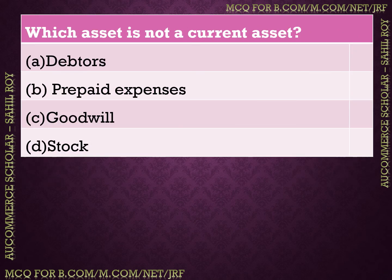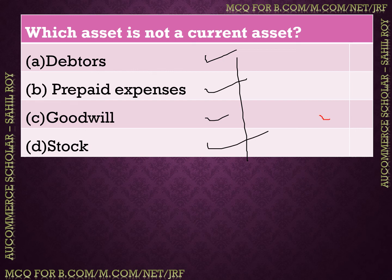The next question: Which asset is not a current asset? Options: debtors, prepaid expenses, goodwill, or stock. Goodwill is not a current asset. The correct answer is option C: goodwill.